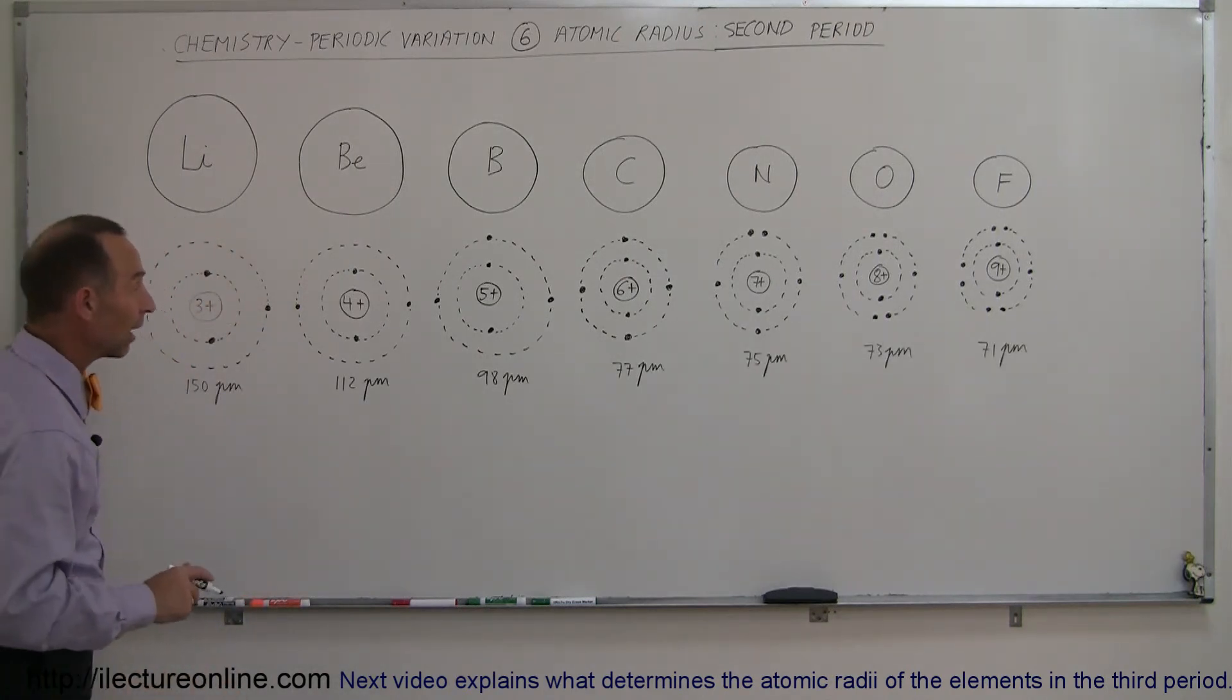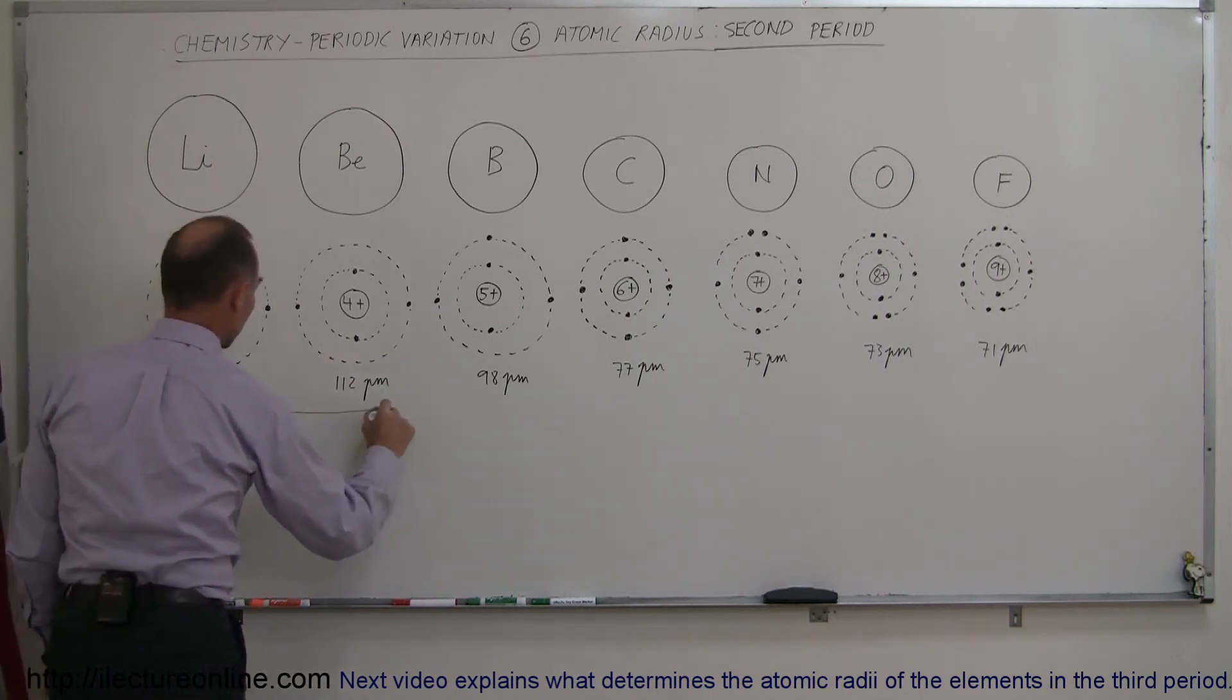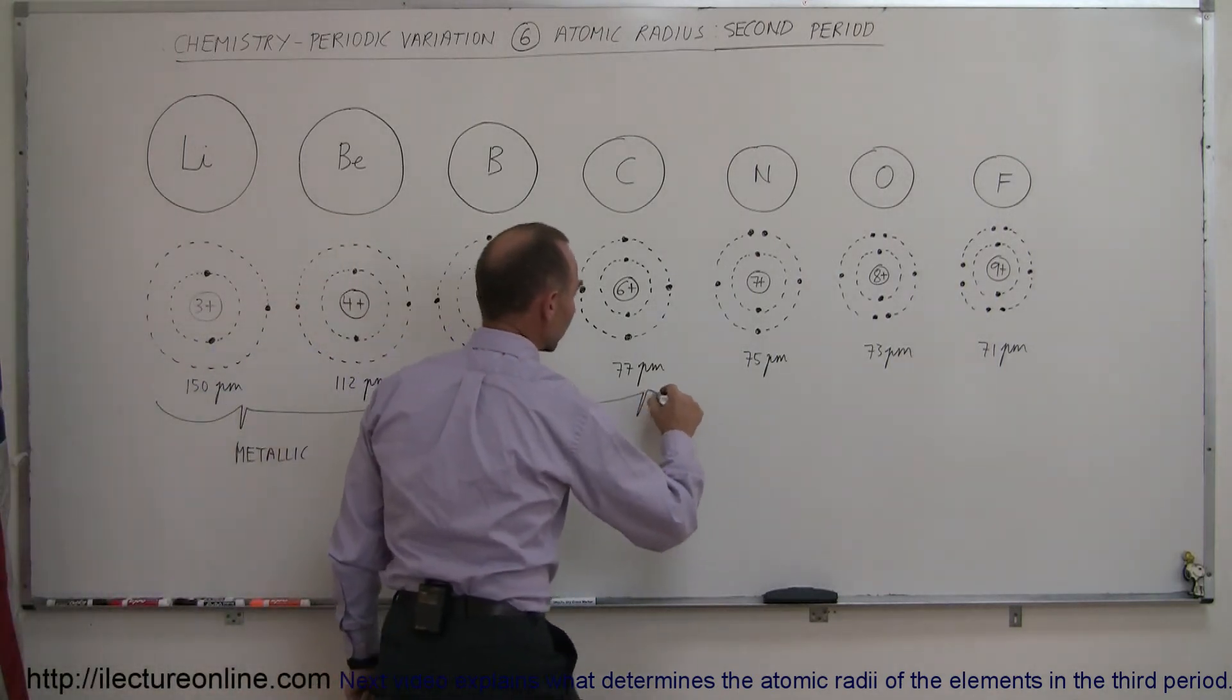So here are the values and the radius for the various atoms. You can see that they do get smaller as we go. Now these are what we would call the metallic radii, and these are the covalent radii.